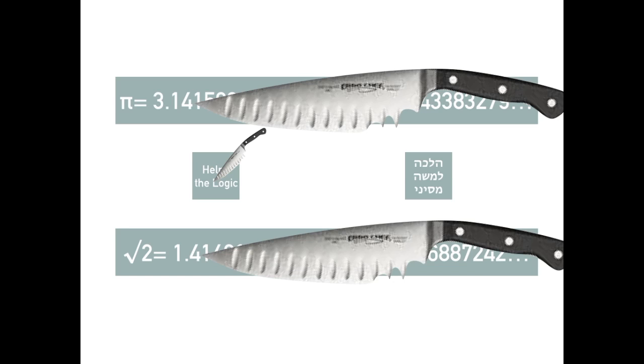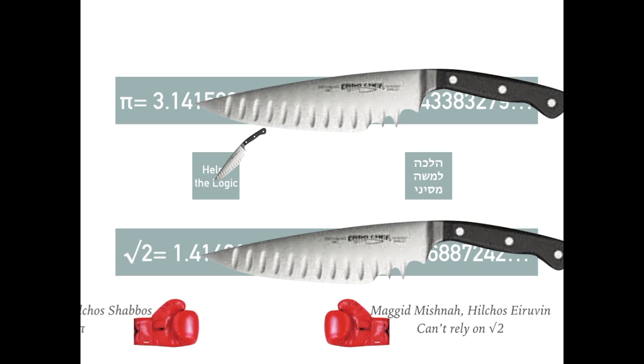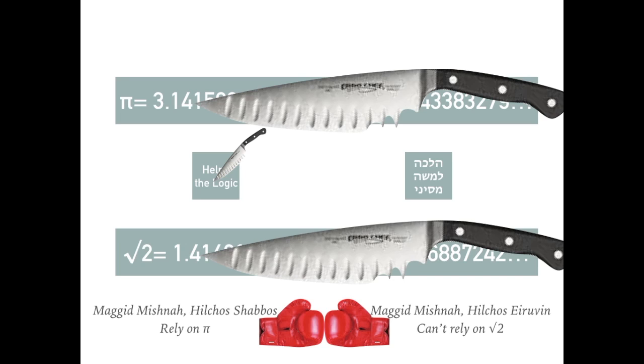Perhaps we can explain via a peculiarity in the Magan Mishnah. He says in Hilchel's Erwin that you can't rely on the square root of 2 equals 1.4. But he also says in Hilchel's Shabbos that you can rely on pi equals 3. Why is one irrational number any different than the other? It's just totally irrational. Maybe the reason is as follows. The square root of 2 doesn't have a pasuk to support that approximation. But pi equals 3 we just saw does have a pasuk.